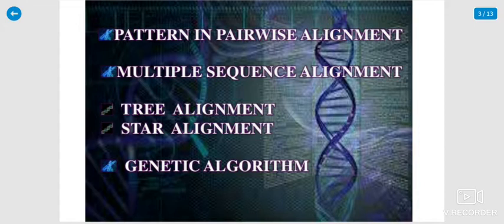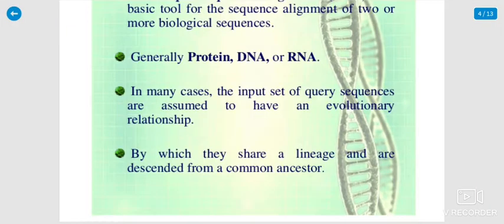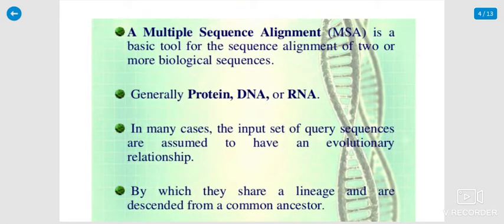There are methods used in bioinformatics, particularly for multiple sequence alignment. There are two types: tree alignment and star alignment. The slide shows that multiple sequence alignment, MSA, is a basic tool for the sequence alignment of two or more biological sequences.